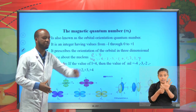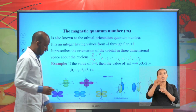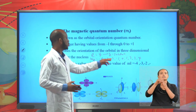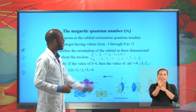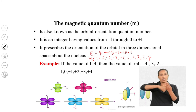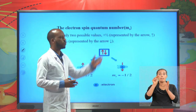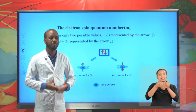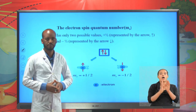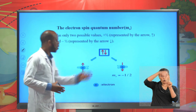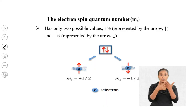The magnetic quantum number indicates the number of atomic orbitals. For l = 4 (g subshell), there are 9 orbitals. The electron spin quantum number, denoted by ms, takes values of either +½ or −½. It indicates the direction of the electron spin: for electrons spinning upward, ms = +½; for electrons spinning downward, ms = −½. The spin quantum number indicates the direction of the electron.